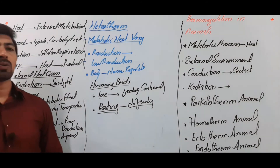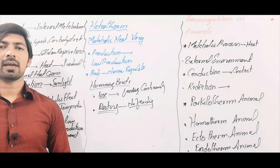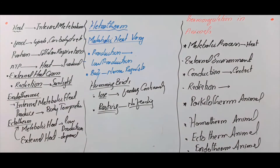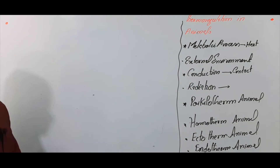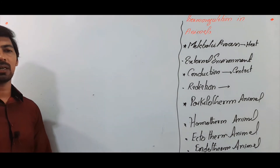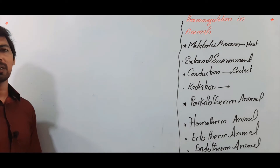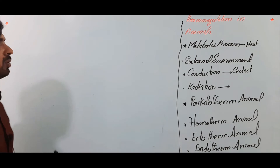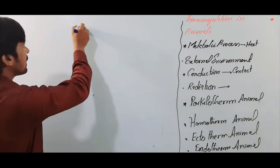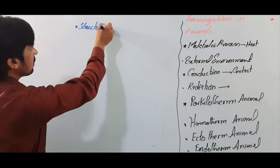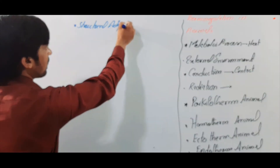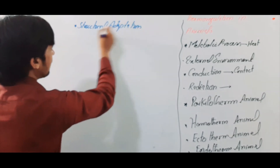Next hum dekhte hain ke jandaron ke andar kaun si physiological aur structural adaptations hain temperature regulation ke liye. Environment ke saath heat exchange karne ke liye janadar ke paas bahut adaptations hain taake woh apna temperature regulate kar sake - kyunki environment ke saath loss bhi karta hai, gain bhi karta hai. First structural adaptation.